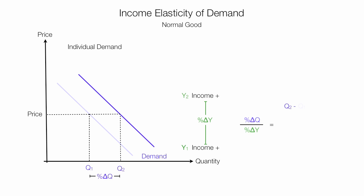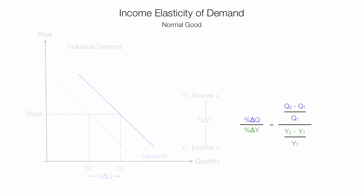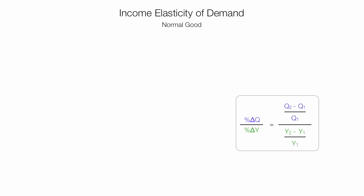This is equal to the second quantity minus the first quantity, divided by the first quantity — that's Q2 minus Q1 divided by Q1 — all divided by the second income minus the first income divided by the first income, which is Y2 minus Y1 divided by Y1. If you were calculating actual percent change, you'd multiply both by 100, but the hundreds cancel out, which is why you won't see them written in your textbook. I am left with this equation, which is the equation for income elasticity of demand.